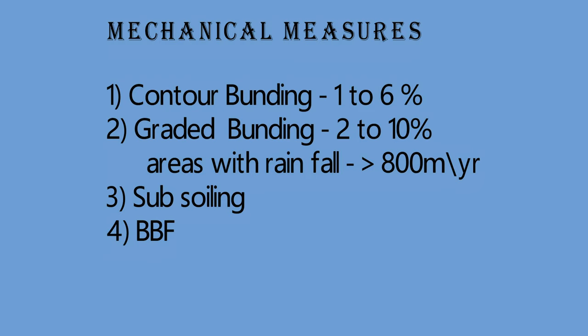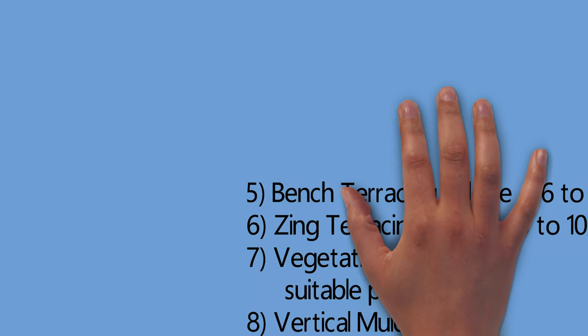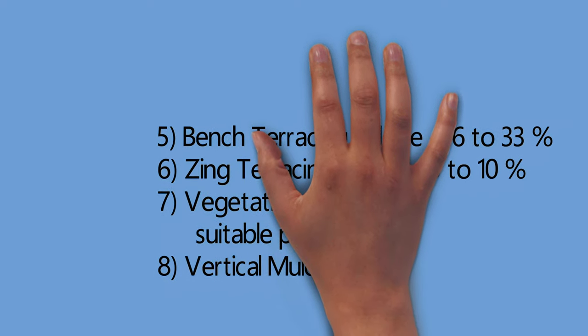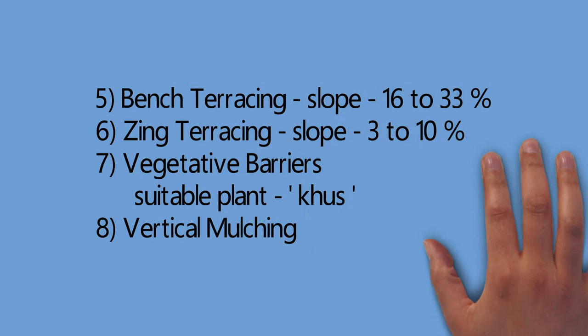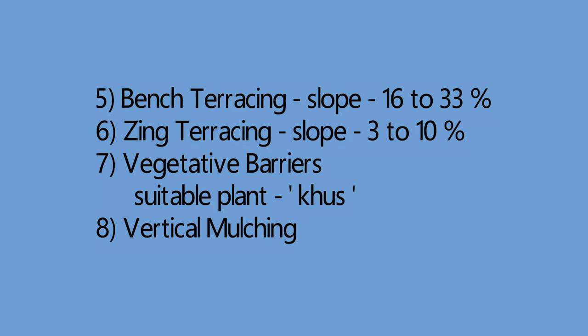Subsoiling involves breaking of the hard pan of soil by a subsoiler. Broad bed and furrow system is also included. Bench terracing is adapted on slopes ranging from 16 to 33 percent — it is a soil and water conservation measure constructed by cutting and filling to produce a series of benches or steps. Zingg terracing is adapted on land with three to ten percent slope with medium to deep soils. Vegetative barriers are closely spaced plantations of grasses or shrubs. Vertical mulching involves digging narrow trenches across the slope and placing straw or crop residue in them — mostly practiced in coffee gardens.